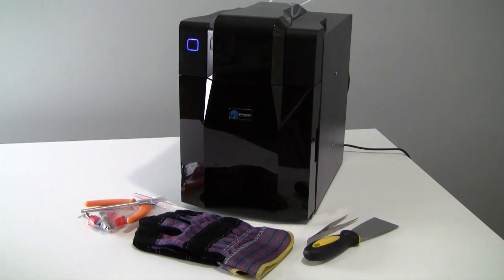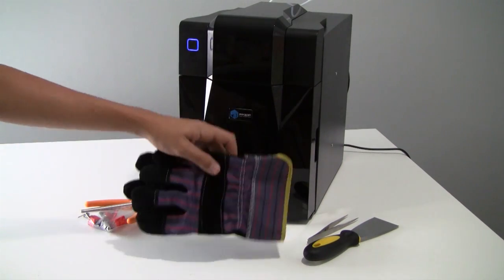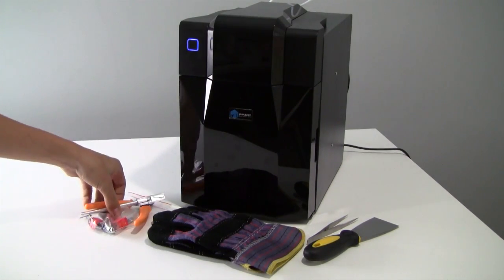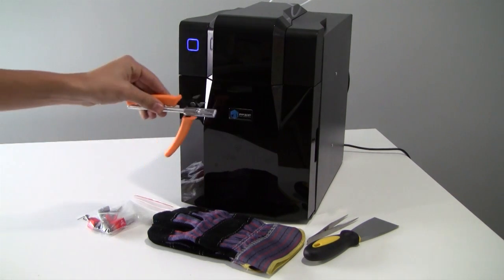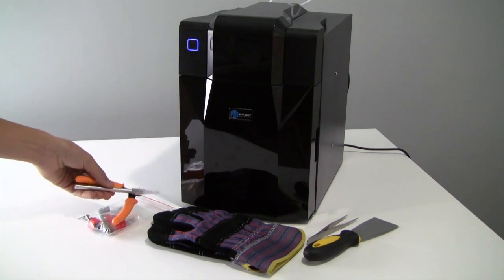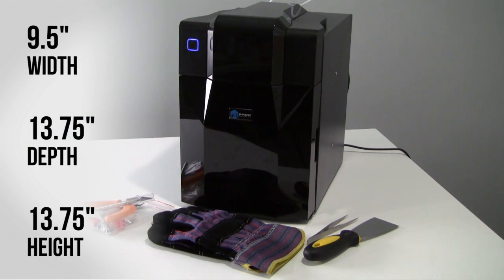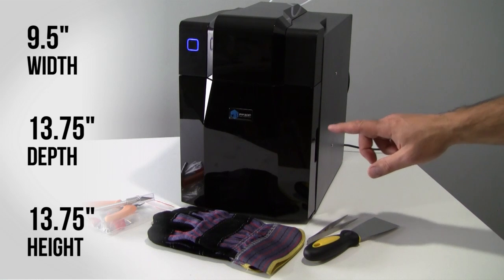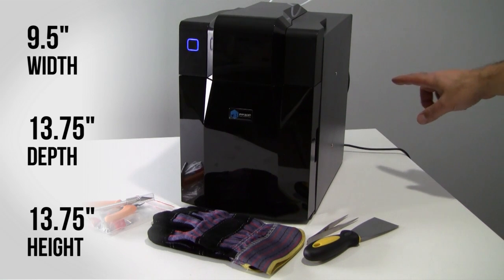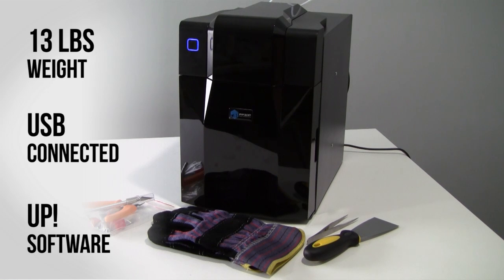With the UP Mini, you get a number of tools and accessories included with the printer. The company includes a pair of work gloves, a sharp pair of snips for cutting away the breakaway support material, an X-Acto knife, a bag of Allen wrenches and other odds and ends, a putty knife, and tweezers. The machine measures 9.5 inches wide by roughly 13.75 inches deep and 13.75 inches tall, weighs about 13 pounds, and sits squarely on your desktop.